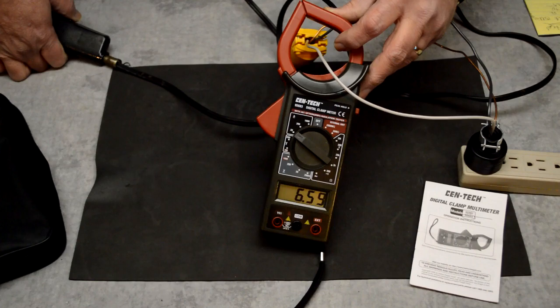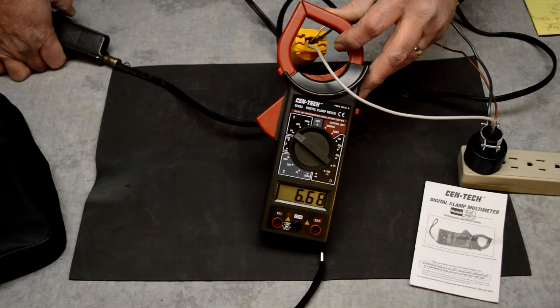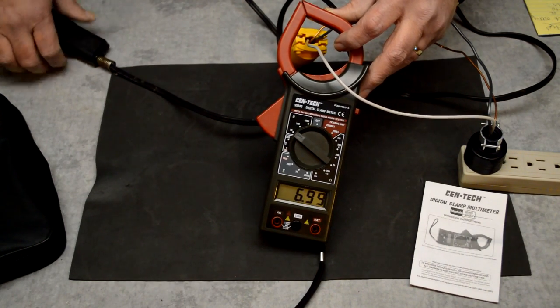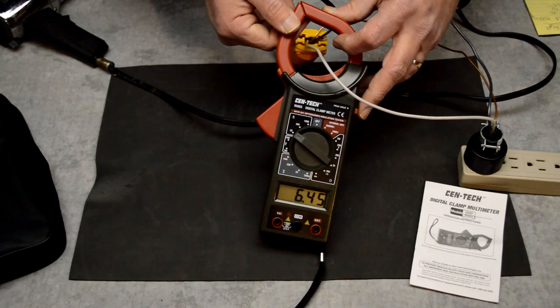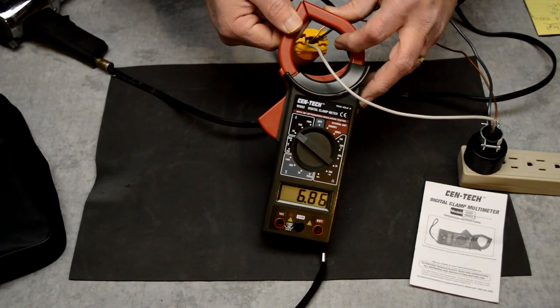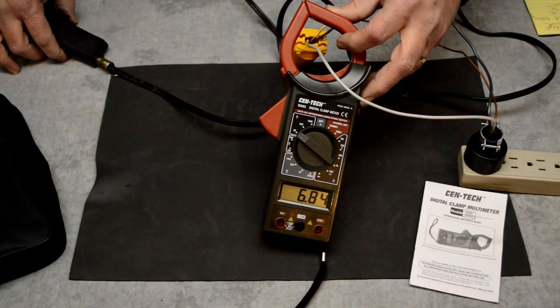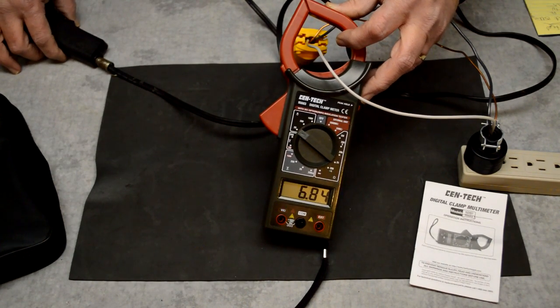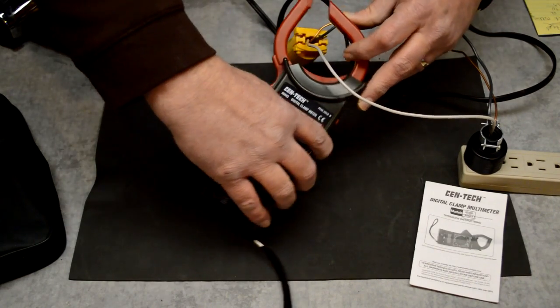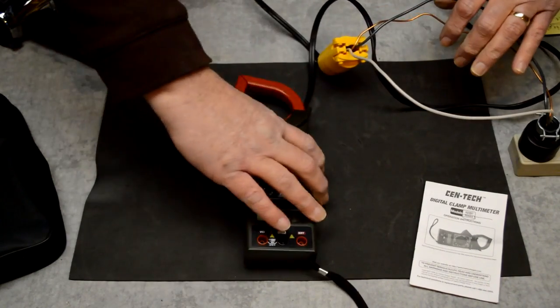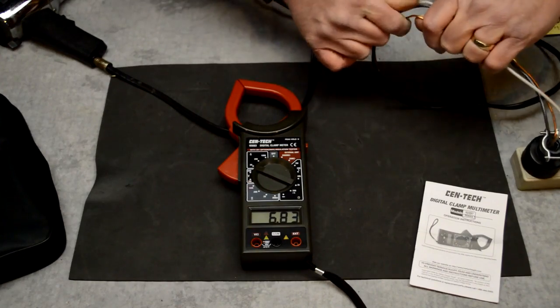It does jump around quite a bit, and that's why I say that it's not super accurate. Now you can press this hold button in here on the side, and it will stop at the highest value, which you can see is 6.84. So that is how you would use your homemade isolation tester and build it as well.